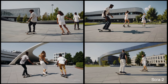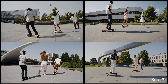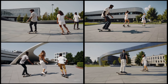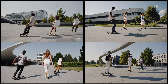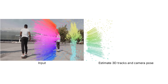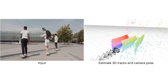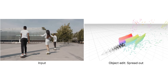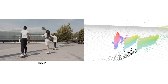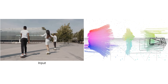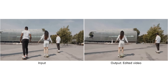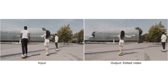Text-driven video editing can generate impressive results. However, both the scene and the object often deviate too much from the original video. In this paper, we propose to use 3D tracks for precise video editing. Our approach enables precise editing of both object motion and camera trajectory, while preserving the high fidelity of the original video.